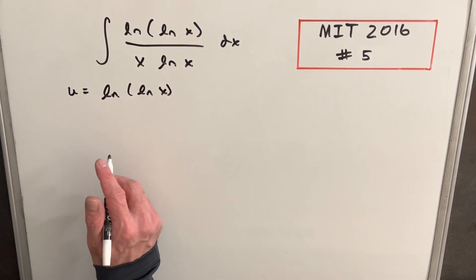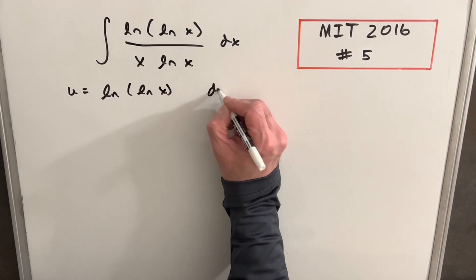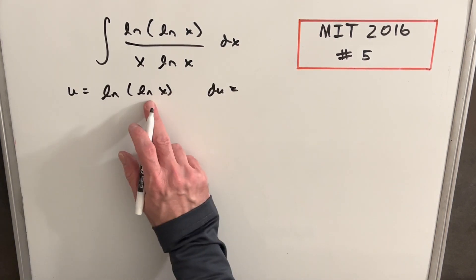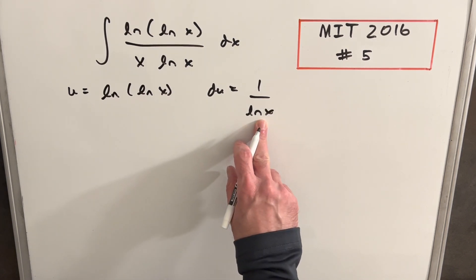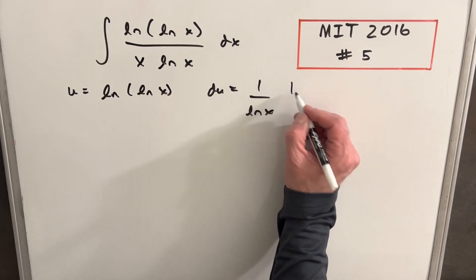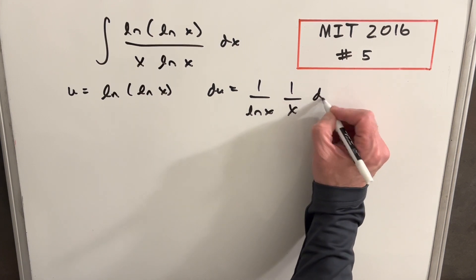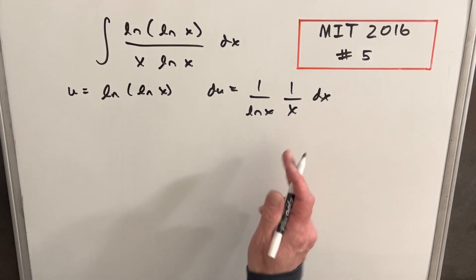So when we take the derivative of this, we'll be using the chain rule. The derivative of this is going to be 1 over ln x, but then we need to take the derivative of ln x and we get 1 over x dx. And that happens to be exactly our denominator.